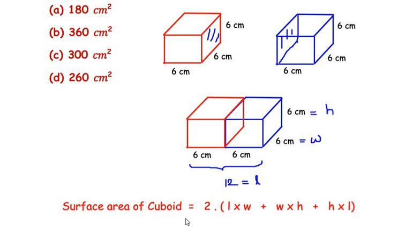Let us substitute the values. That is 2 times, the length of the cuboid is 12, so 12 times width is 6, plus width is 6 times height is 6, plus height is 6 times length is 12.